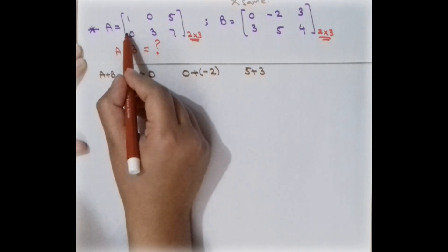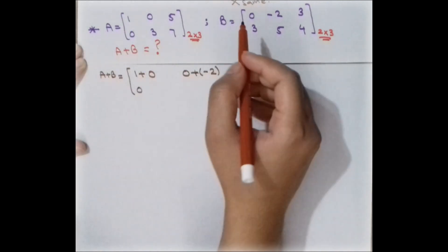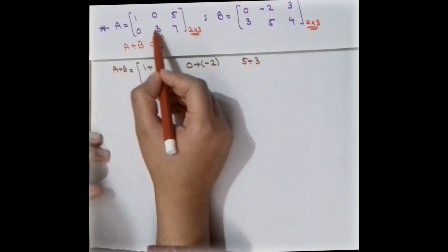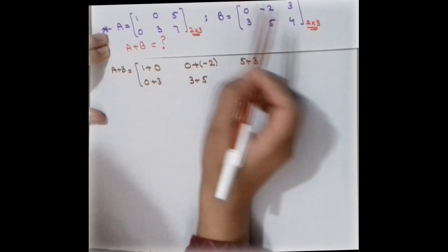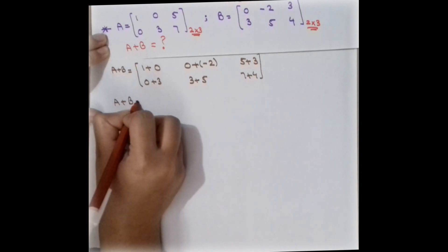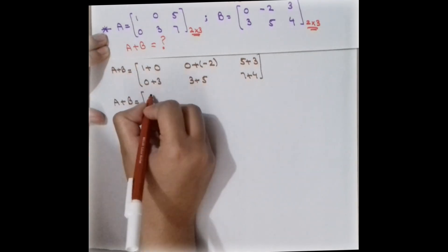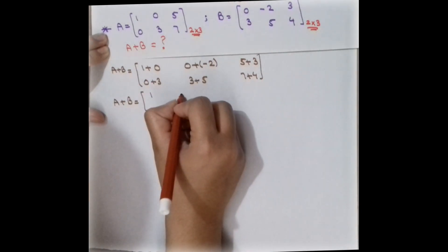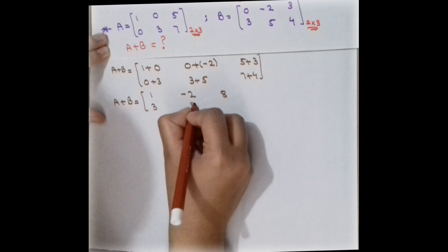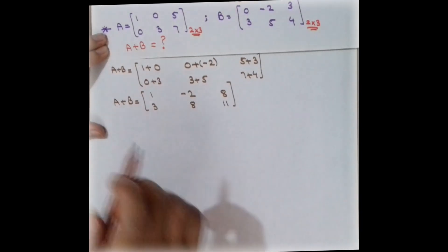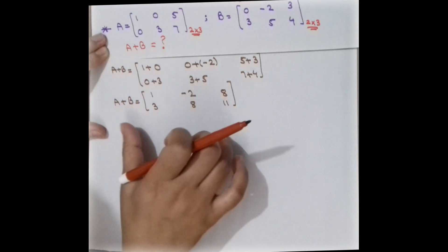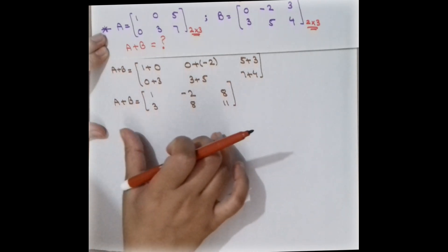Similarly, 0 is the first element of the second row and first column of one matrix, and 3 is the first element of the second row and first column of the other, so we add 0 plus 3. Then 3 plus 5, and 7 plus 4. Computing the results: 1, minus 2, 8, 3, 8, 11. This is the resultant matrix after addition, and its order is also 2 by 3.